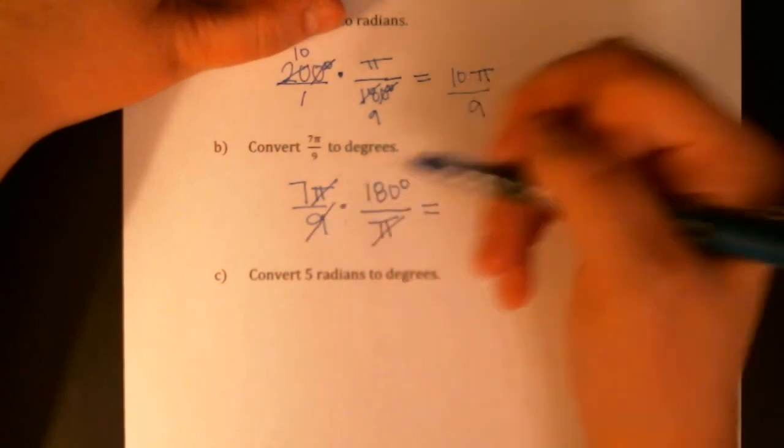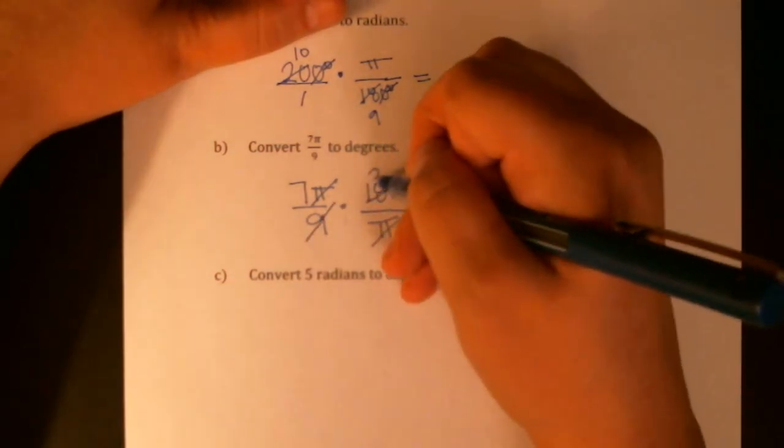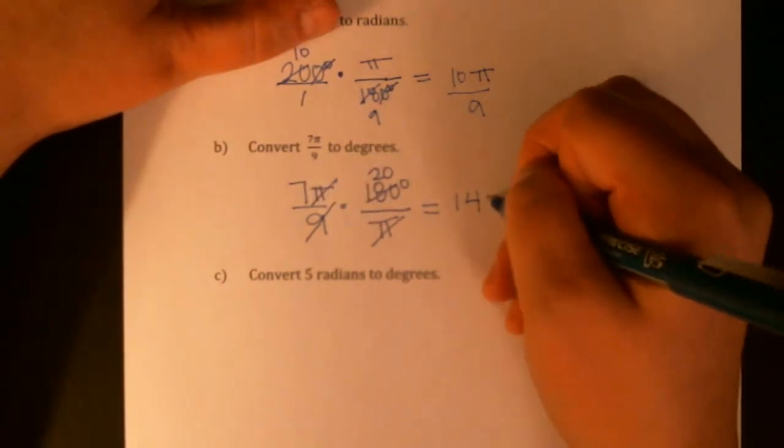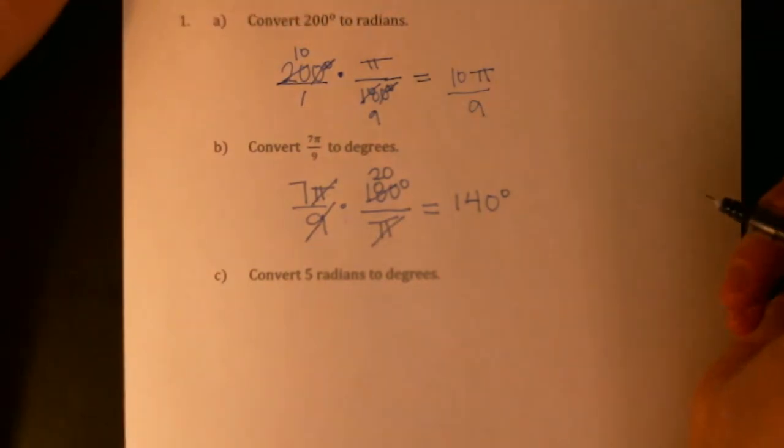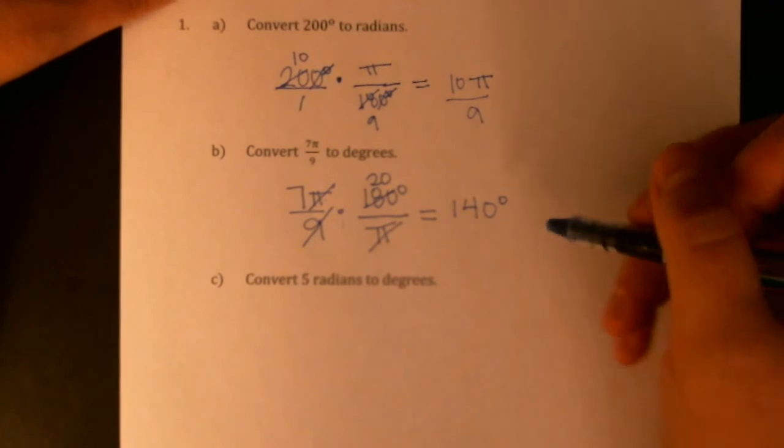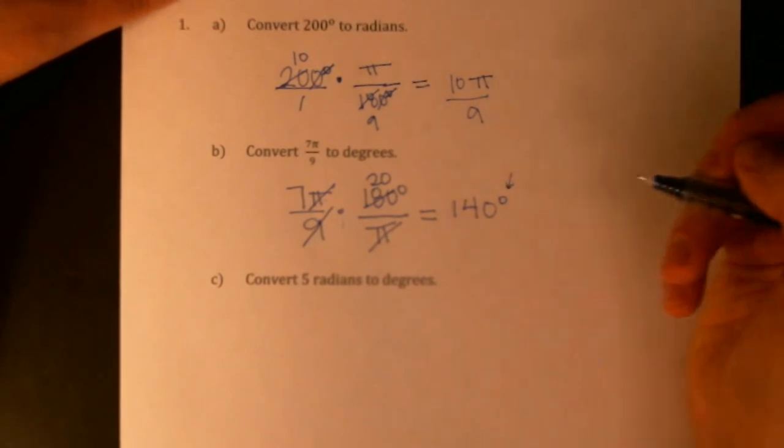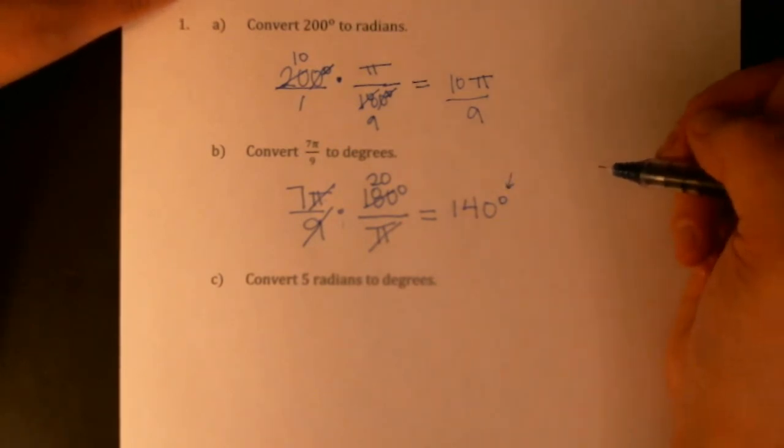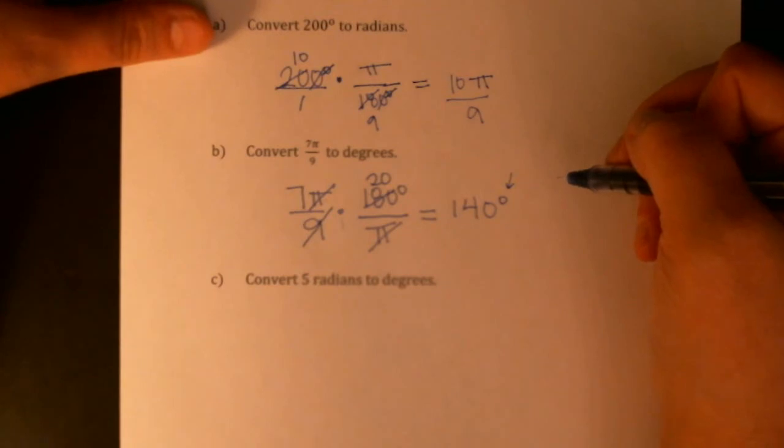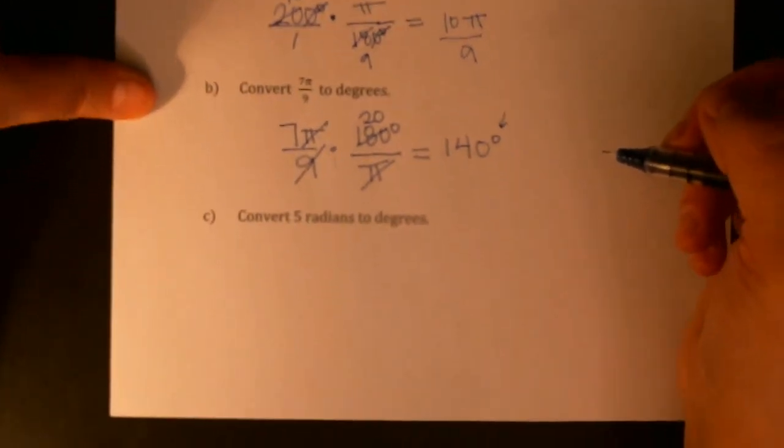I'm going to cancel a 9 out. 9 should go into 180 twenty times, so I'm seeing that all I'm left with is 7 times 20, which is 140 degrees. So 7π over 9 radians, which is a little less than halfway around the circle, is equivalent to 140 degrees, which is also a little less than halfway around the circle. It's extremely important that you write this degrees in, for me that's the only way I know that you've ended up with degrees as your units as opposed to radians.